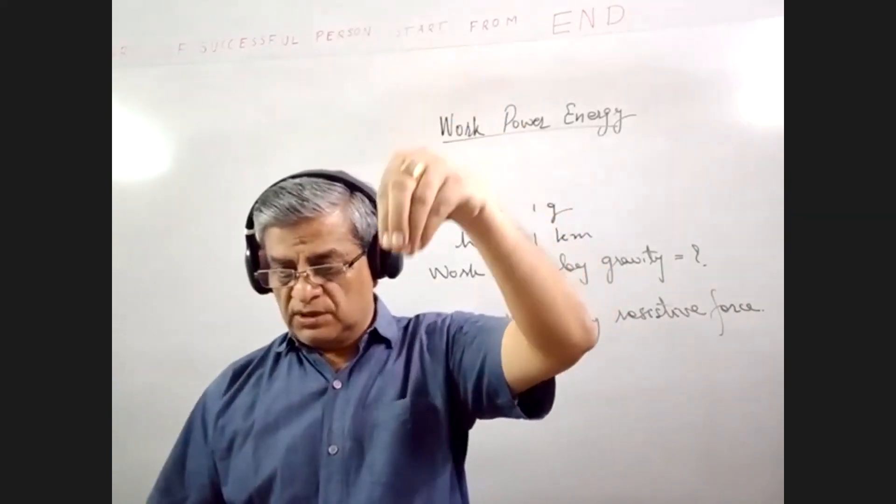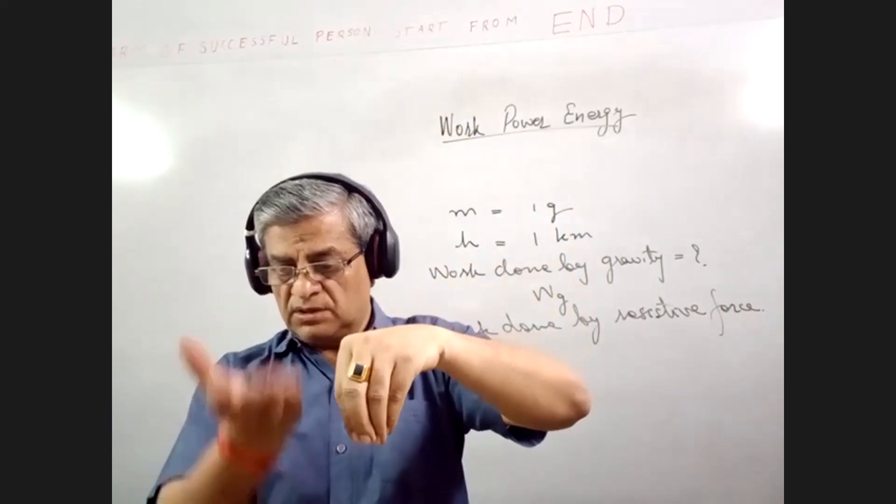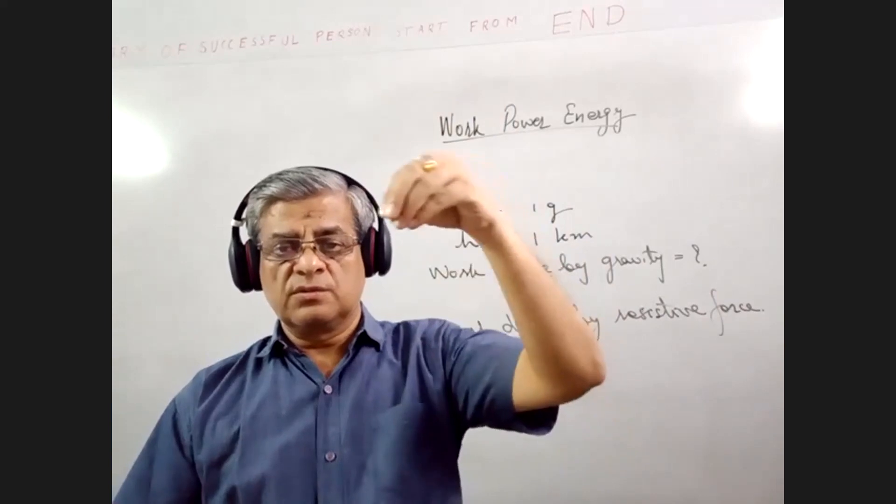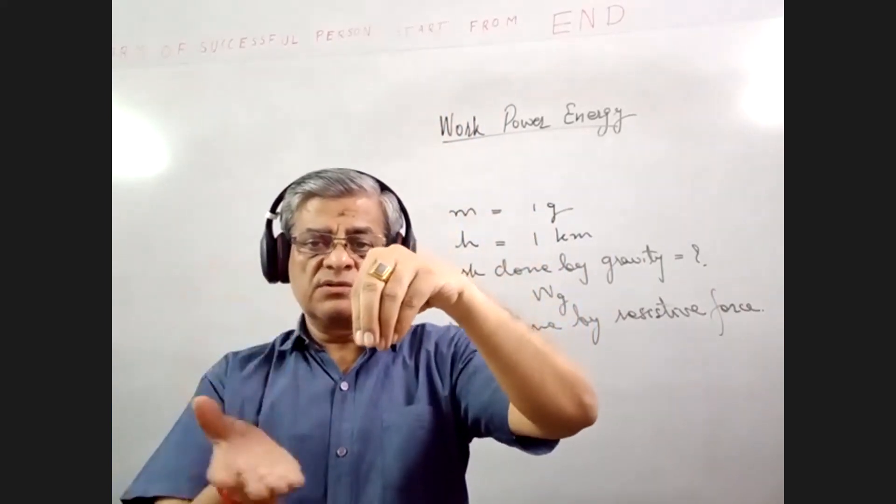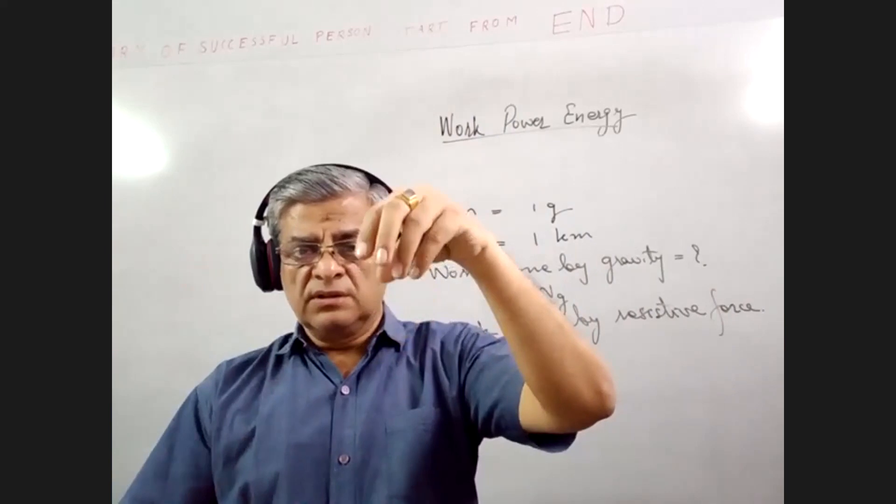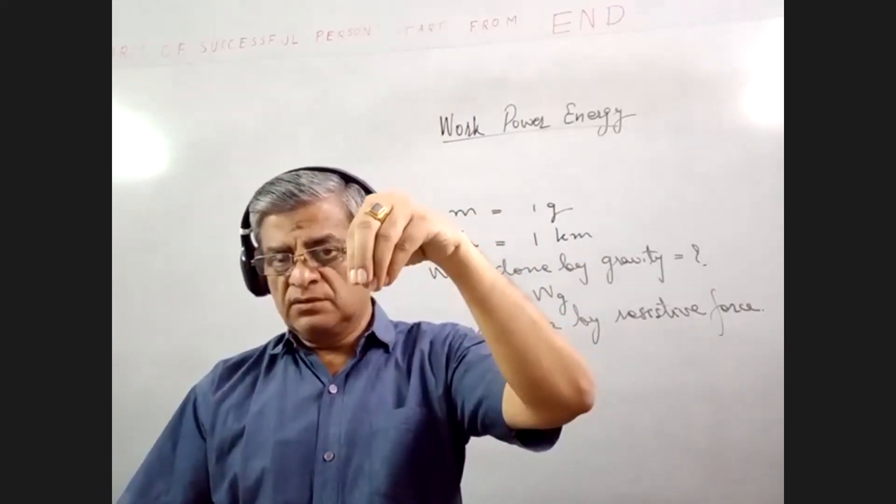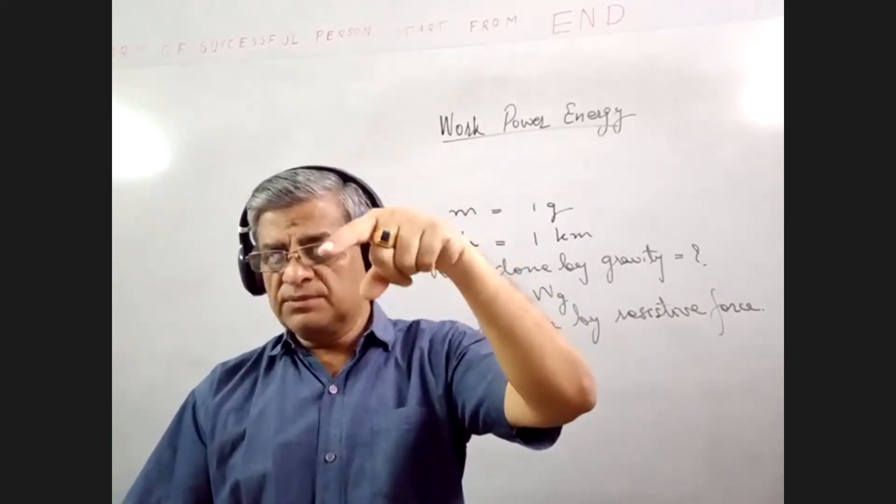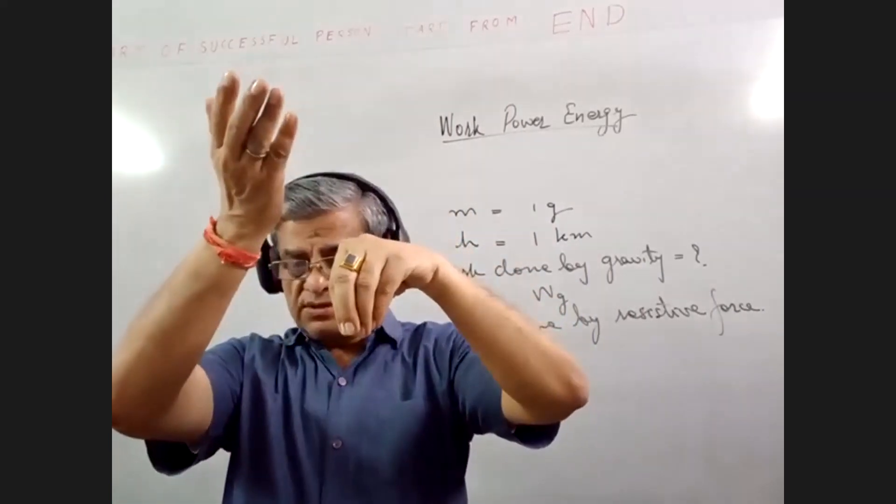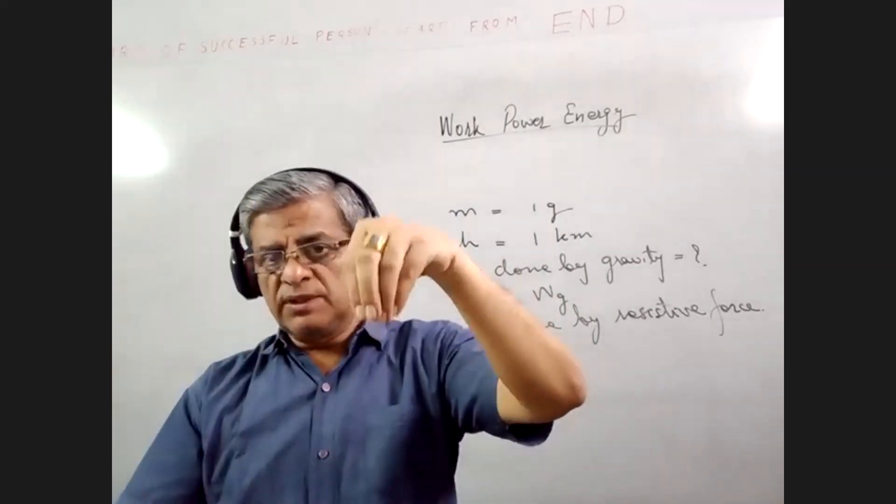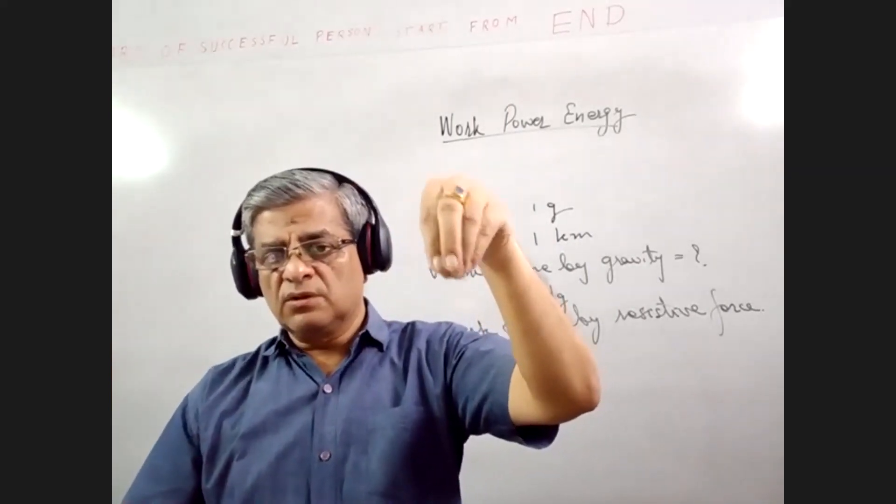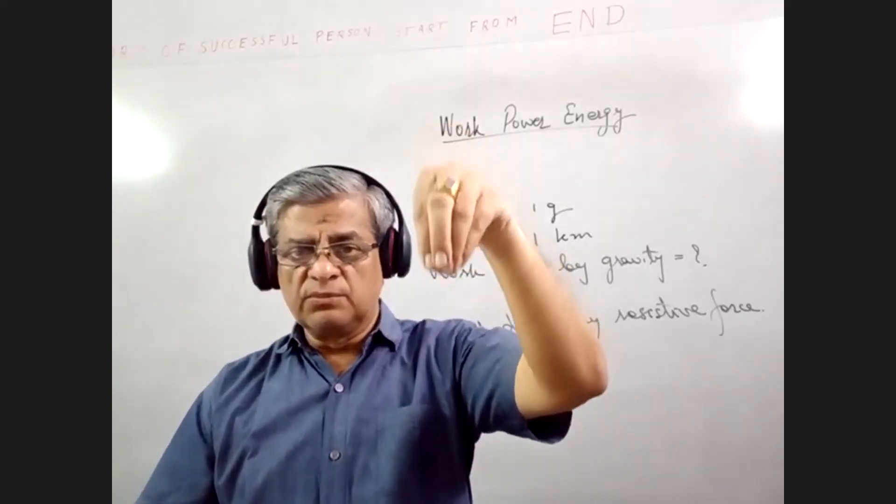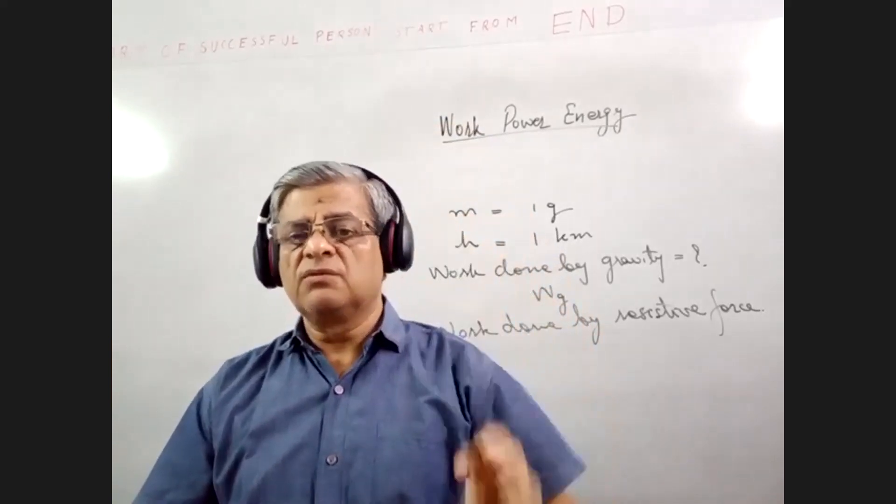When the drop is falling down, air resistance opposes the motion of the drop. So as the speed increases, air resistance also increases. There is a state when the force due to gravity becomes equal to the force of air resistance. Both being equal and opposite, the net force on the drop becomes zero. And then thereafter, the drop moves with a uniform velocity.